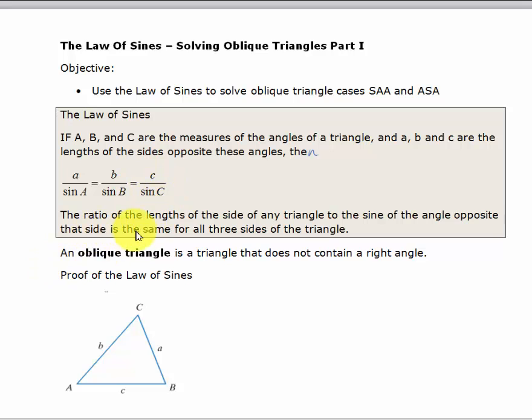In general, the ratio of the lengths of any side of a triangle to the sine of the angle opposite is the same for all three sides.